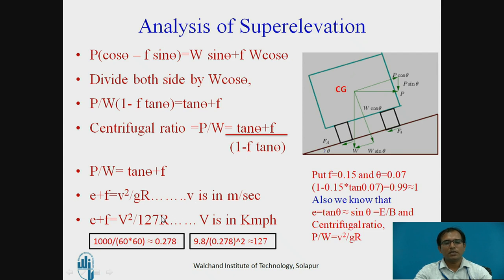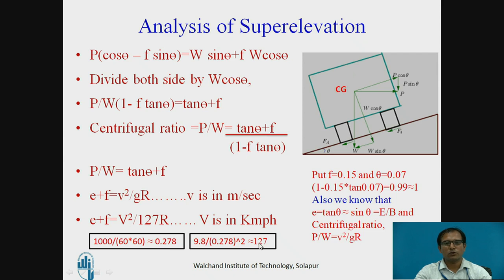To convert the equation to V in km/h, multiply V by 1000/(60 × 60) to convert to meters per second. Substituting and simplifying with G = 9.8 m/s², the factor 9.8/(0.278²) ≈ 127. The final equation when V is in km/h is: E + f = V²/127R, where V is in km/h and R is in meters.